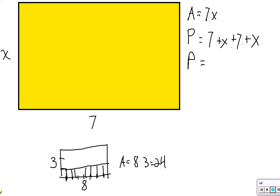We can clean that up a bit. We have 2x. x plus x is 2x. 7 plus 7 is 14. All right.